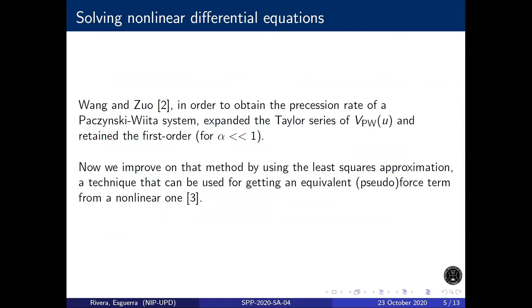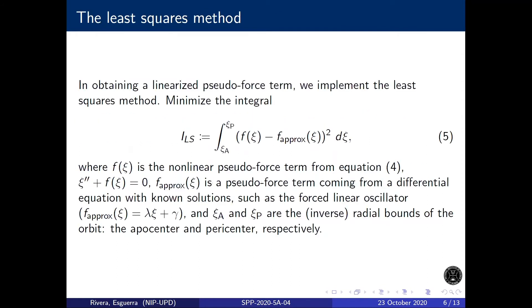The Taylor series of the pseudo-force from equation 4 was already done by Wang and Zhuang. For this study, we used the least squares method, which can improve the approximation of the nonlinear pseudo-force. We implement the least squares method by minimizing this integral with respect to the coefficients of the approximating linear pseudo-force. We solve the bounds of the integral by exploiting classical mechanics.